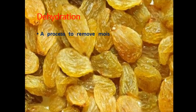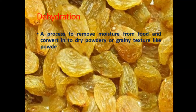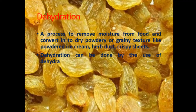Dehydration is a process to remove moisture from food and convert it into dry, powdery, or grainy textures — such as powdered ice cream, herb dust, or crispy sheets. Dehydration can be done by the use of dehydrators or substances like maltodextrin.